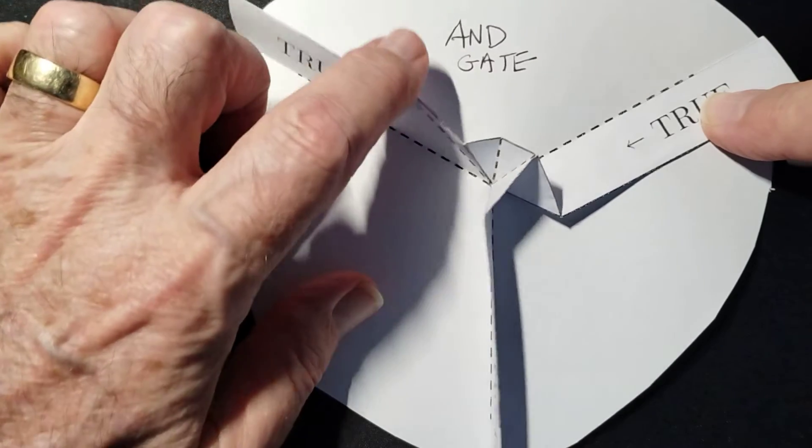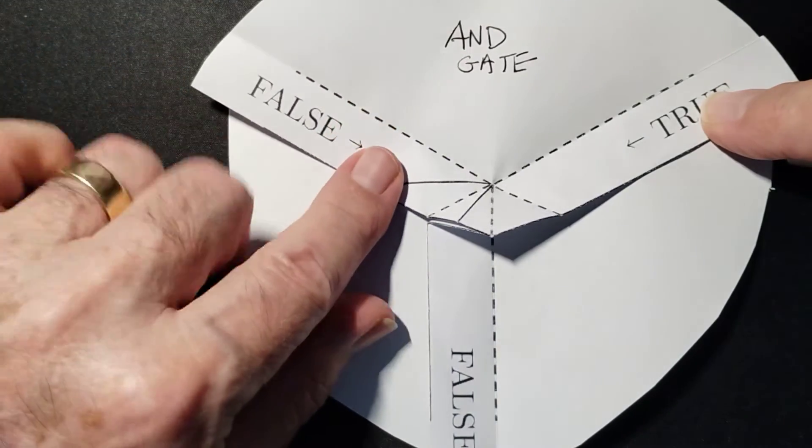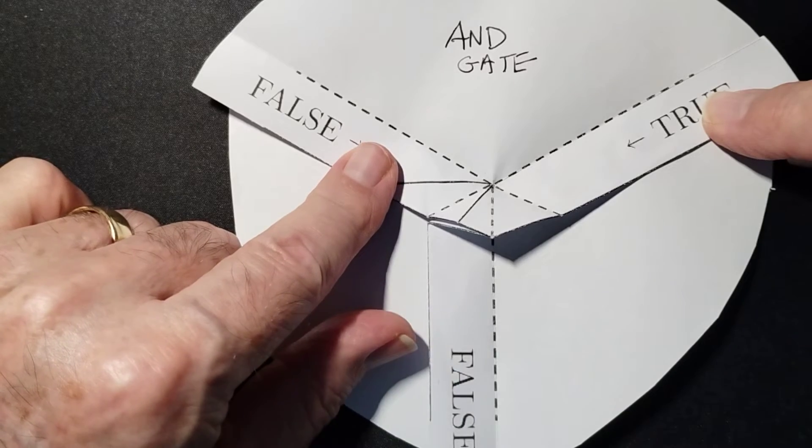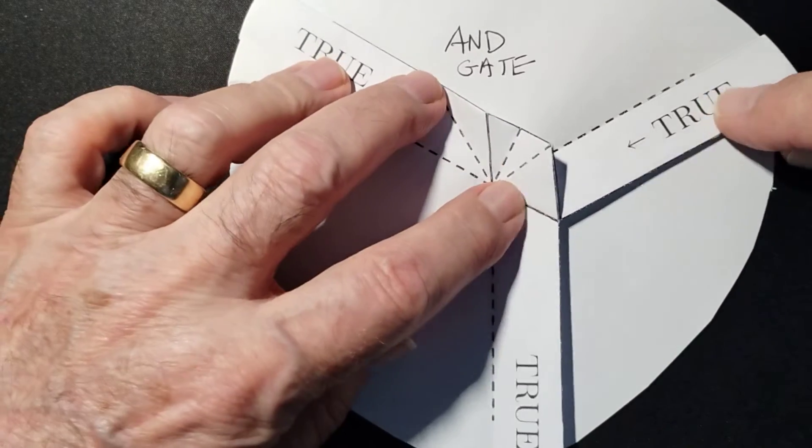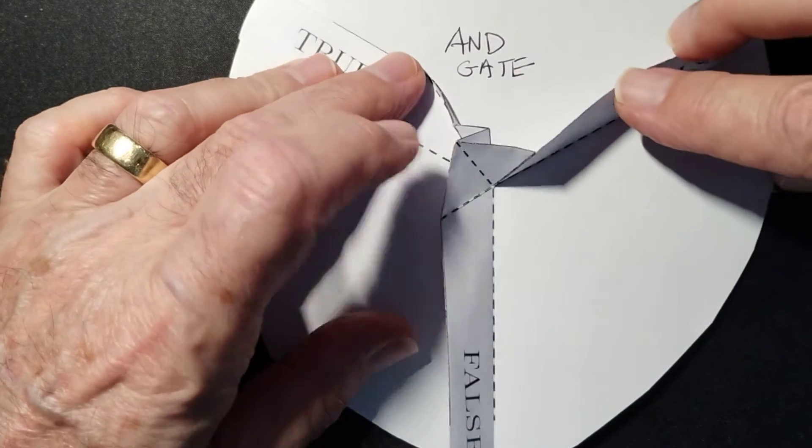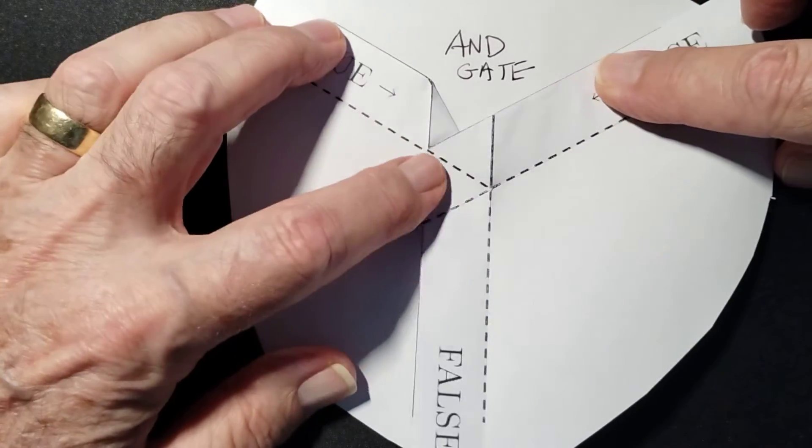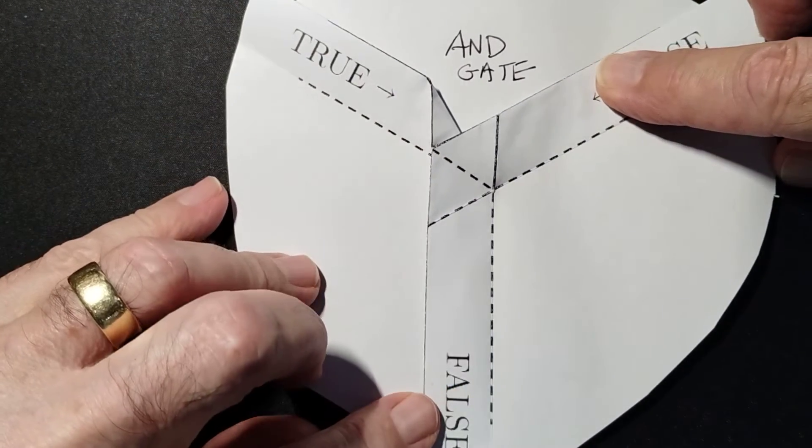The moment I introduce a false, then the widget automatically calculates the output as false. If I put that to true and change that one to false, then you'll notice the widget causes the output to be false. So that's a correct AND as well.